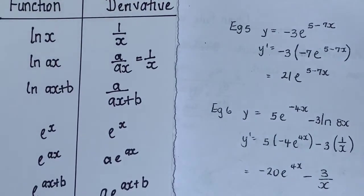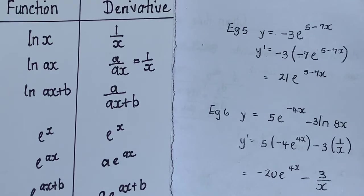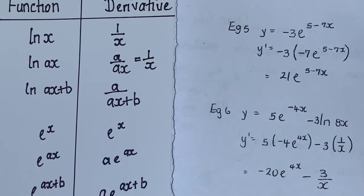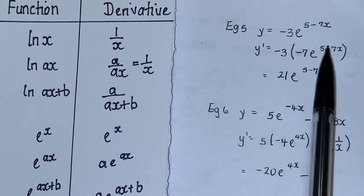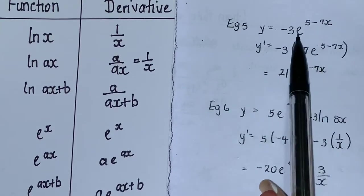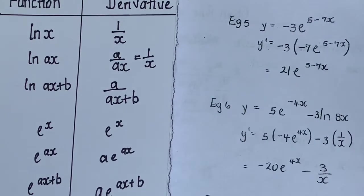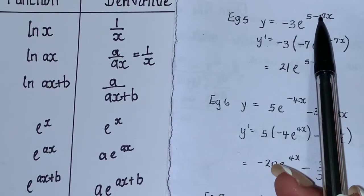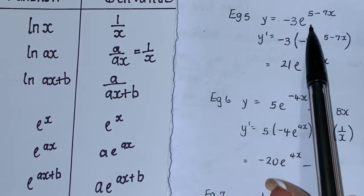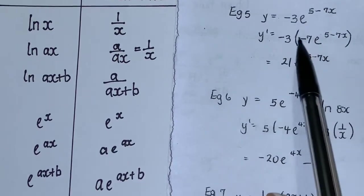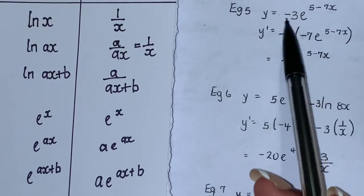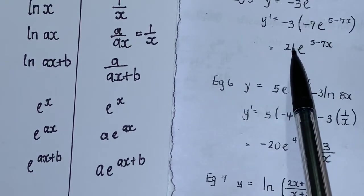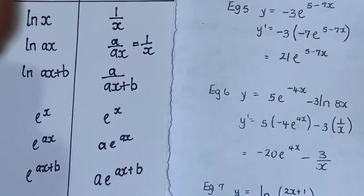Now for the exponential examples. Here we have y = −3·e to the (5 − 7x). This is in the form e to the (ax + b), so we differentiate the power and multiply by the negative 3 outside. Differentiating the exponent gives negative 7, so we get negative 7·e to the (5 − 7x), multiplied by negative 3. Negative 3 times negative 7 gives our answer: 21e to the (5 − 7x).